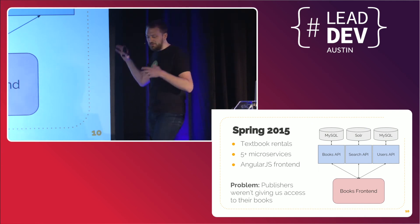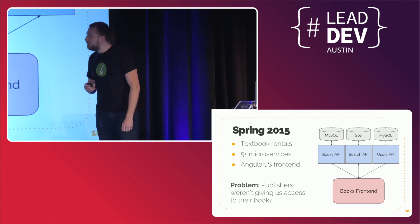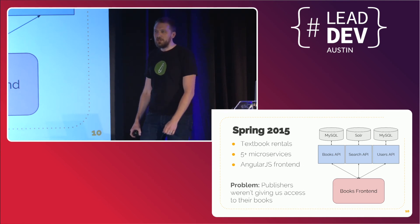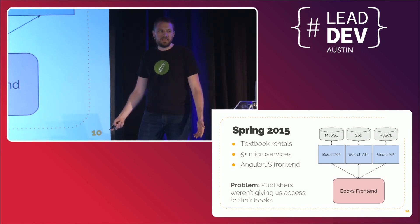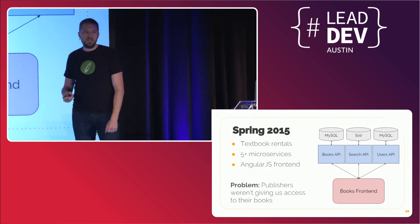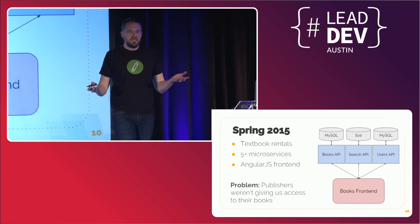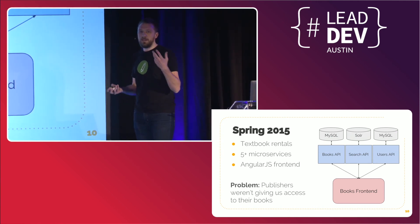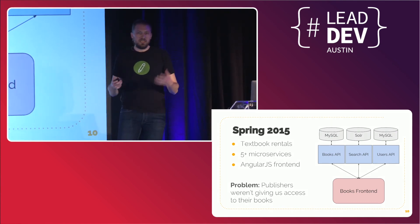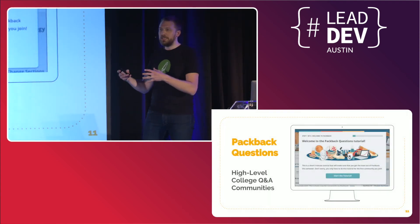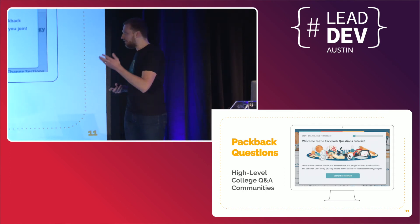We had users check out and rent their books, view them in our platform, handled customer service functions. The challenge was barely anybody could actually rent any textbooks because publishers weren't willing to work with us. Like any two-sided marketplace, we had the challenge: we can fill up one side but can't fill the other. Do we get college students and not have anything to give them, or find publishers with no customers?